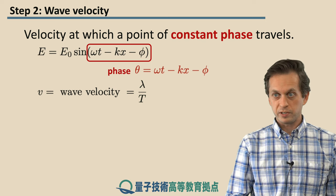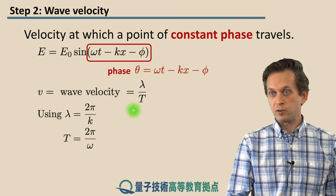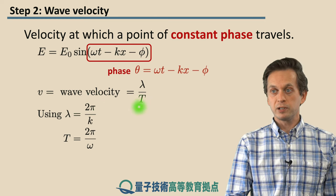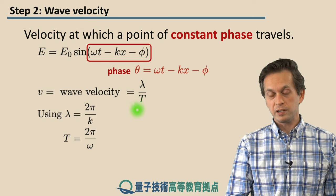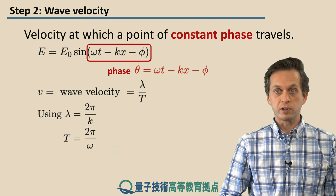So we saw in the previous step that lambda is related to the wave number k as follows. Lambda is equal to 2π over k. And similarly, the period of oscillation, capital T, is related to ω, the angular frequency, as 2π over ω.